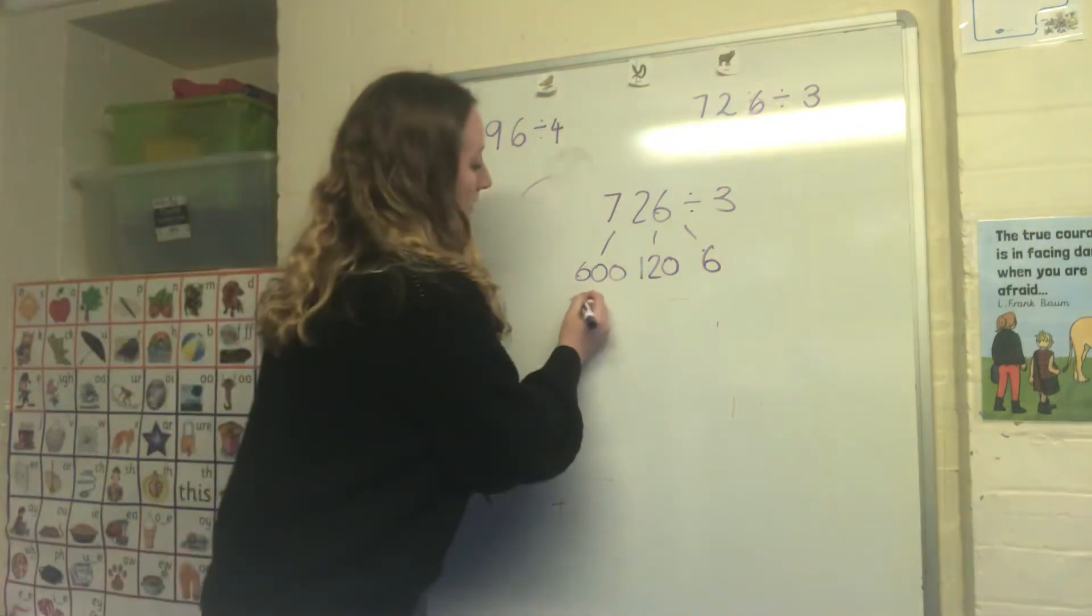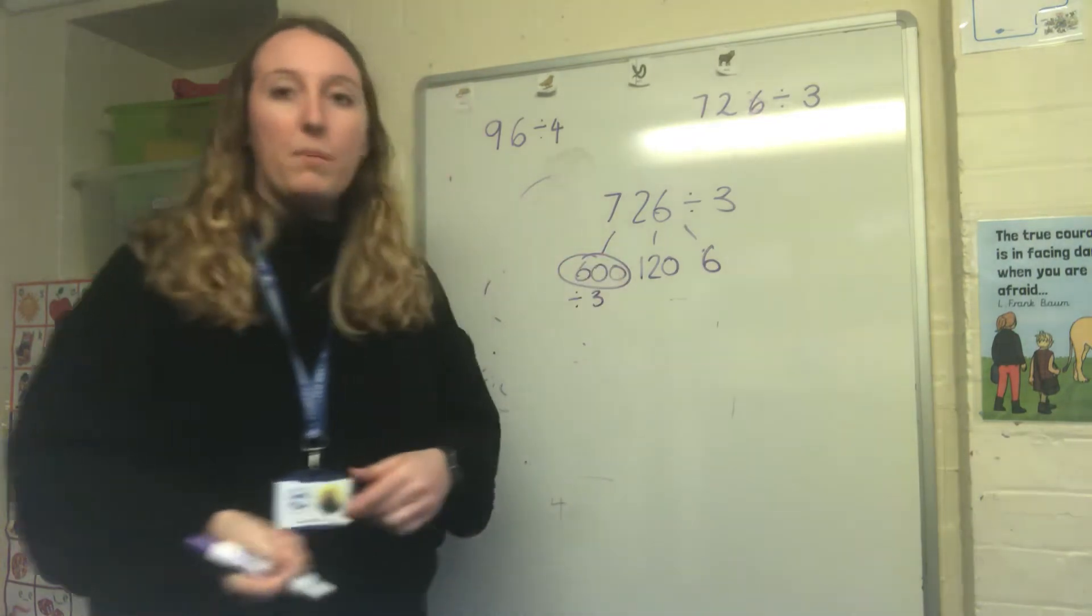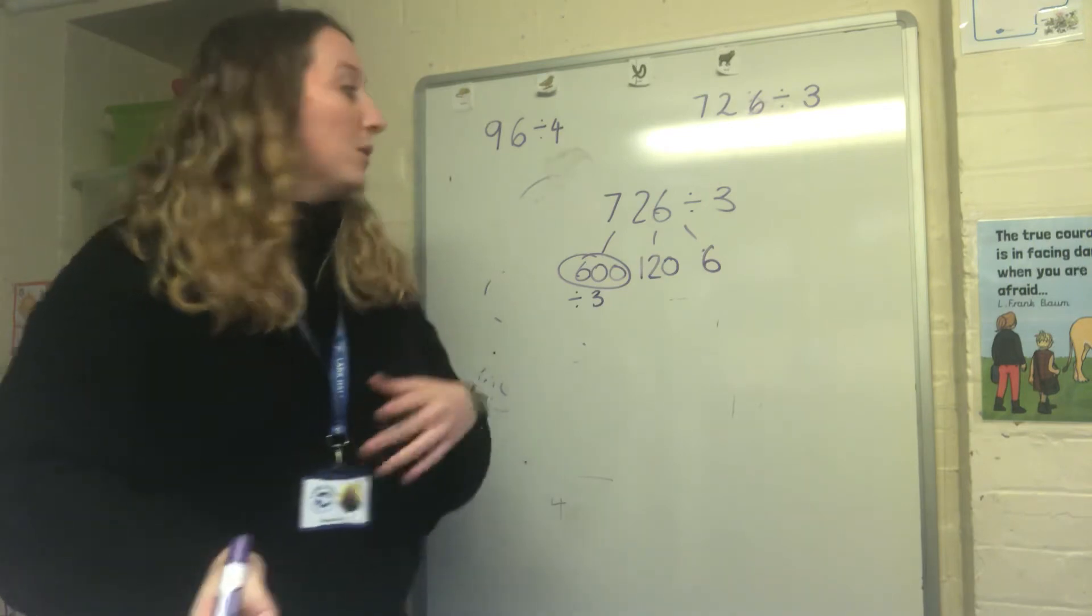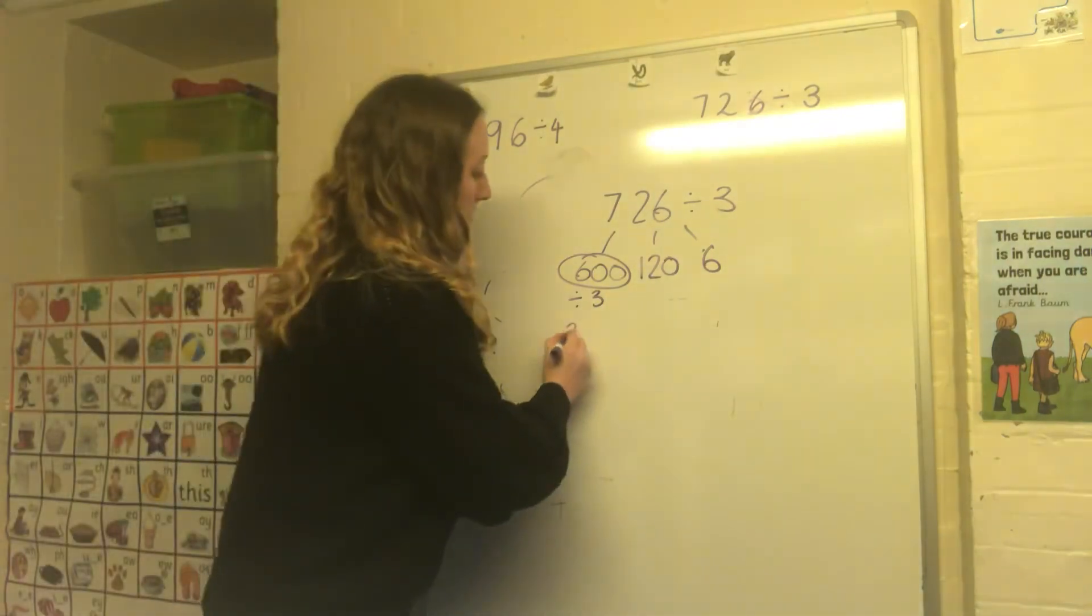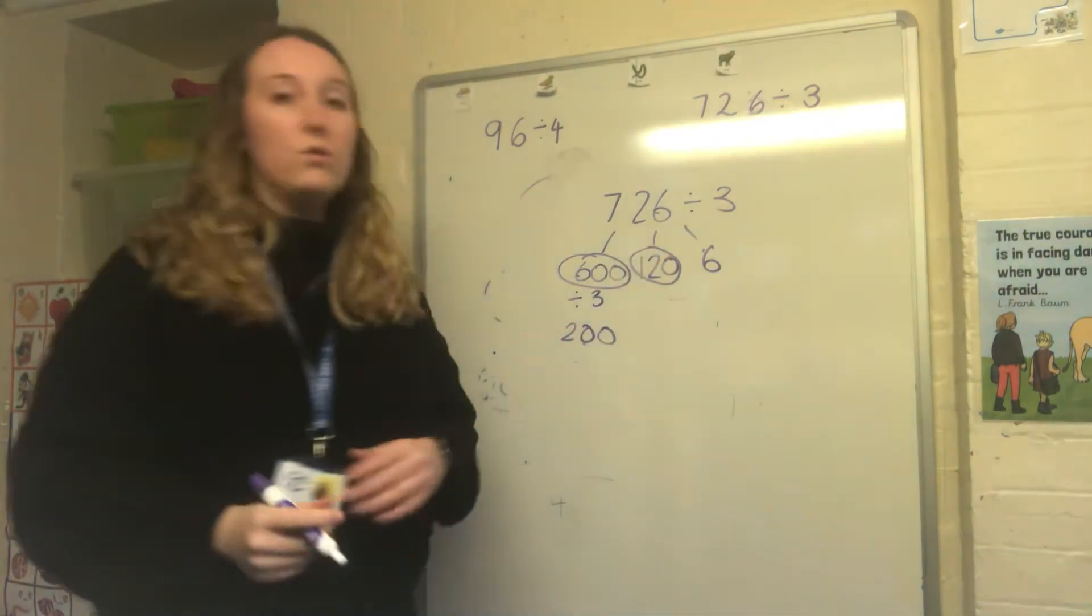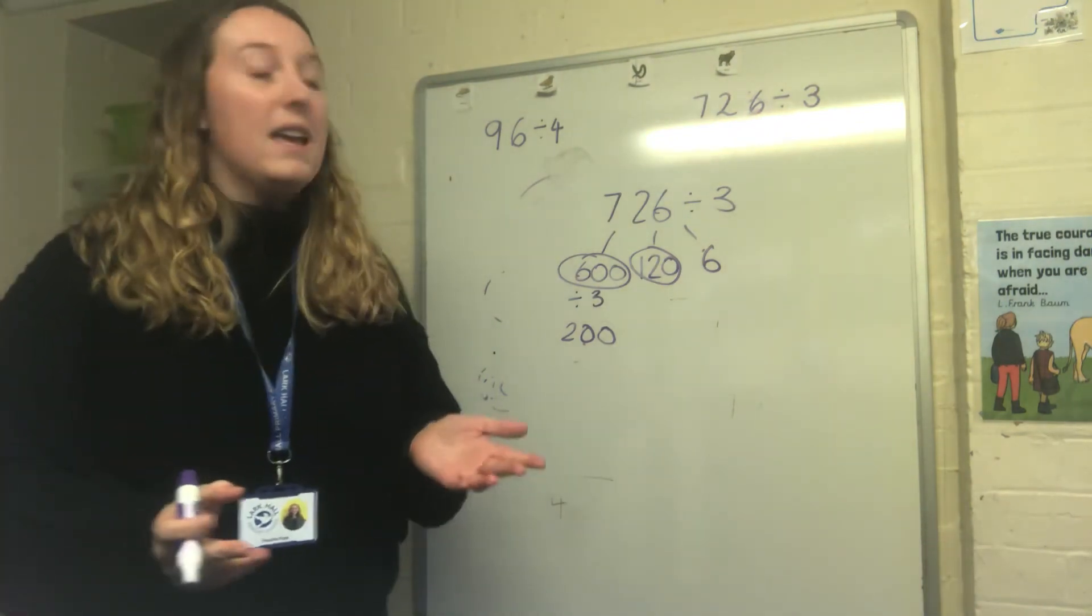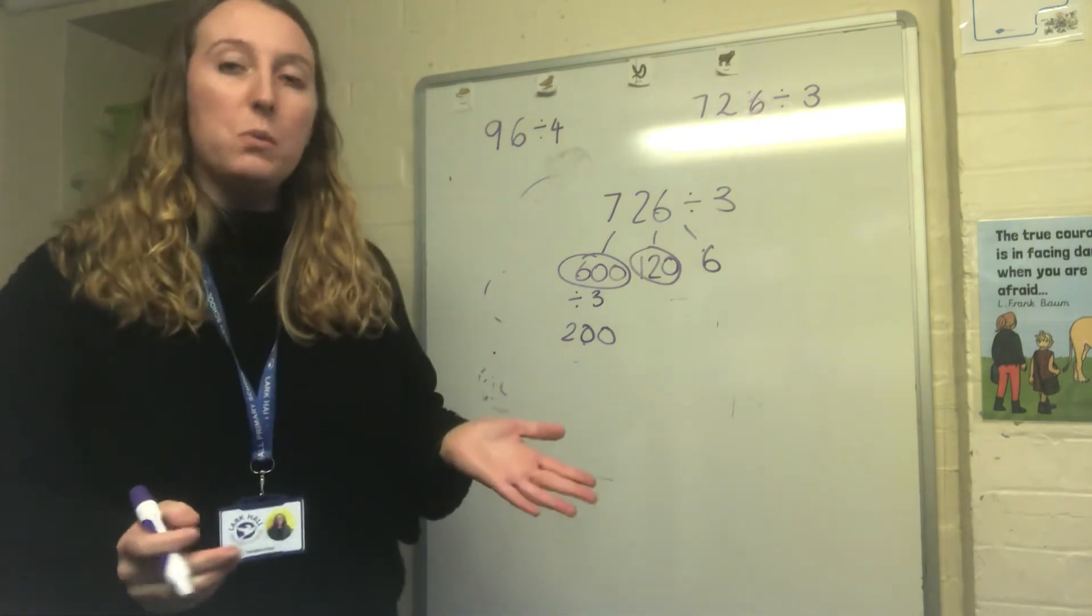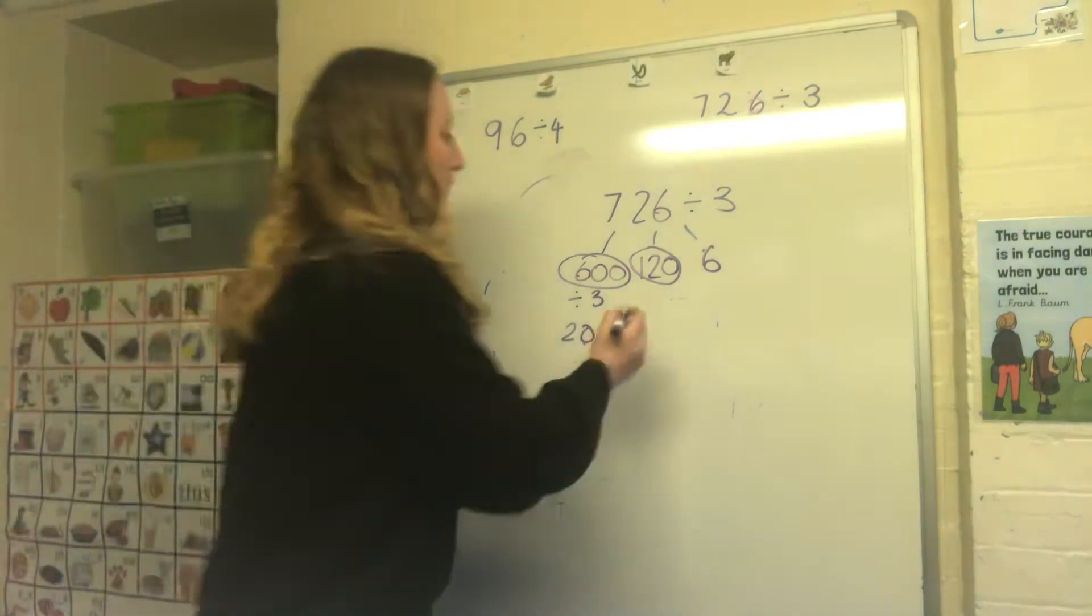So 600 divided by 3 I know that 6 divided by 3 is 2 so 600 divided by 3 which is just 100 times bigger is going to be 200. Next I'm looking at 120 divided by 3. I know that 12 divided by 3 is 4 so again 120 is just 10 times bigger than 12 so my answer needs to be 10 times bigger. So 4 multiplied by 10 is 40.